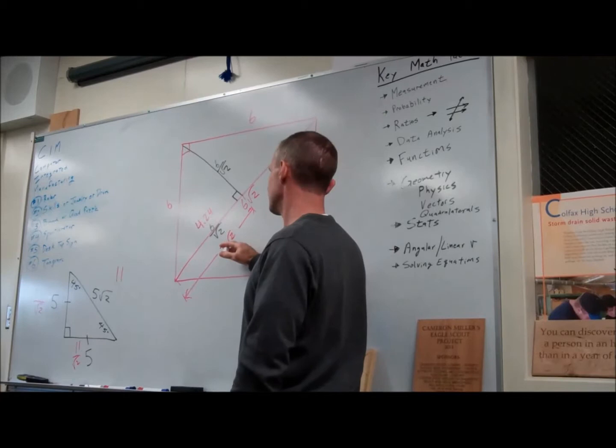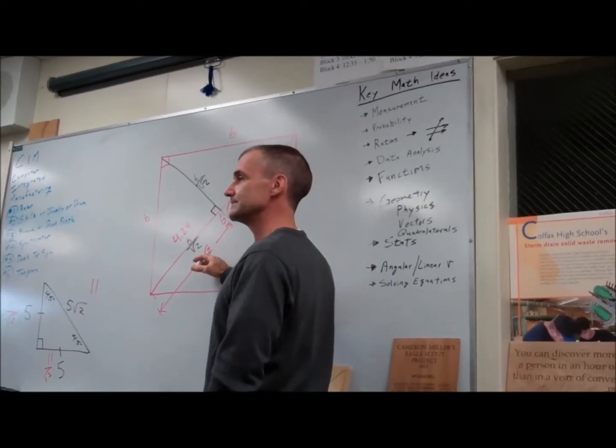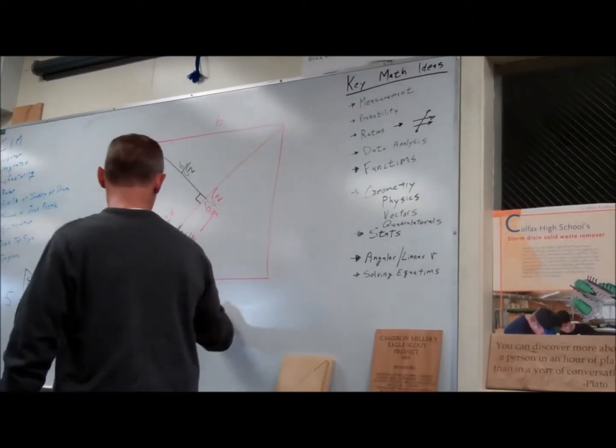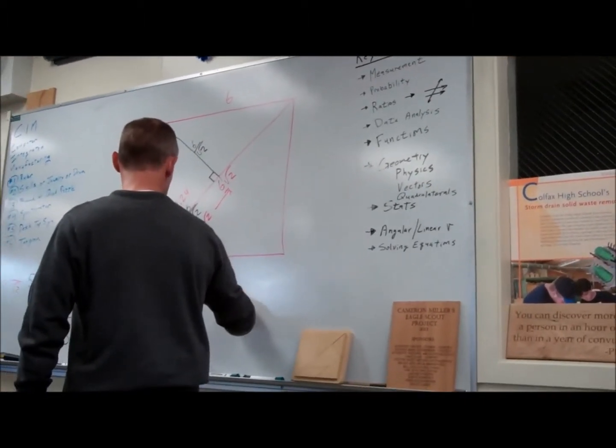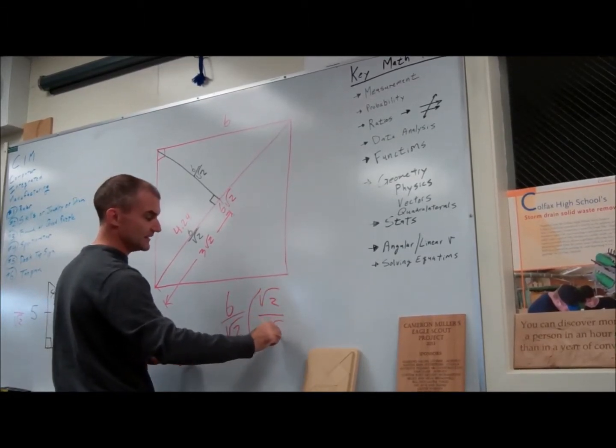Any ideas how I could convert this to this or this to this? Yeah, I have six over root two. I could always multiply by one, so as not to affect the value. That's exactly right.